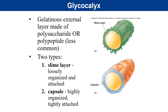If a species of bacterium has a glycocalyx, it would be described as a gelatinous external layer made of a complex sugar like a polysaccharide, or sometimes a complex protein-based structure called a polypeptide, which is less common. The two major types of glycocalyx are the slime layer — which is more loosely organized and can slough off more easily — and the capsule, which is much more highly organized and tightly attached. The capsule is sometimes alternatively referred to as the K antigen.